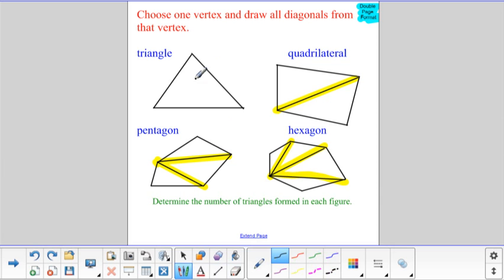And what we're really interested in is the number of triangles that are formed in each of these figures. So what you should hopefully see is that in the triangle, of course, there's one triangle. In a quadrilateral, there's two triangles formed. In a pentagon, there's one, two, three triangles formed. And in a hexagon, there's one, two, three, four triangles formed.